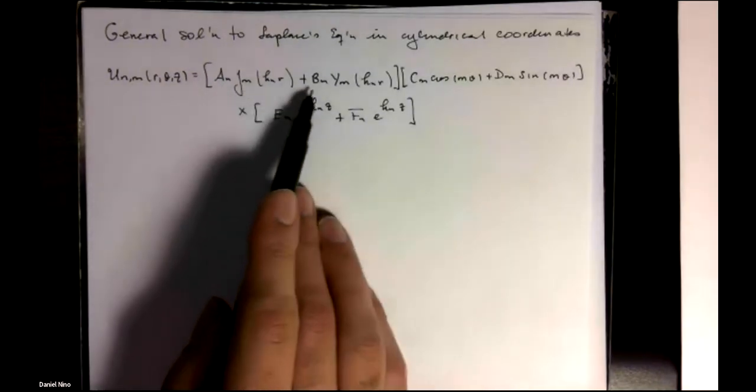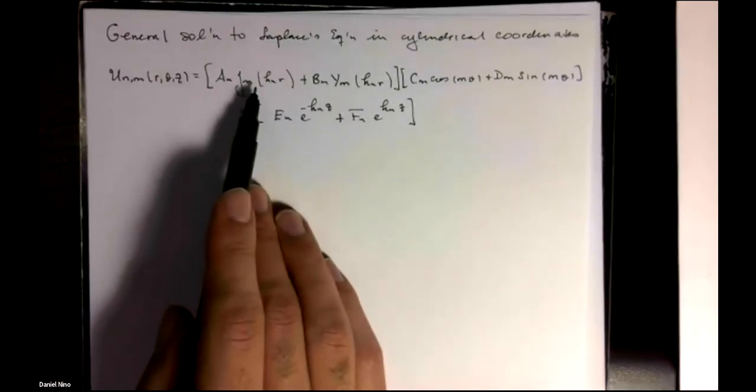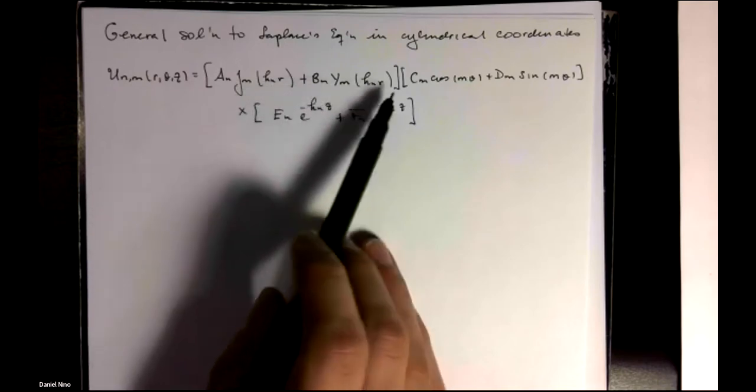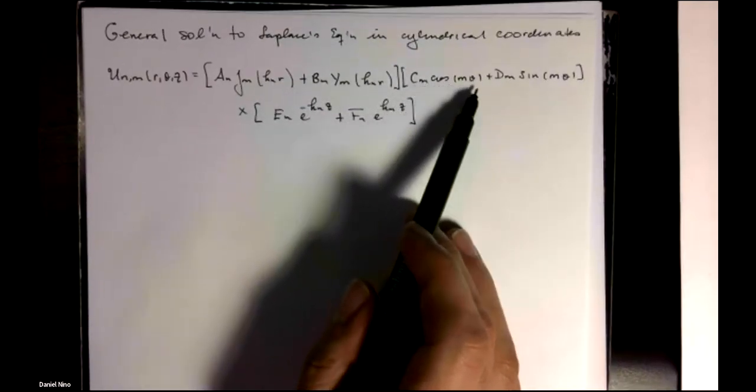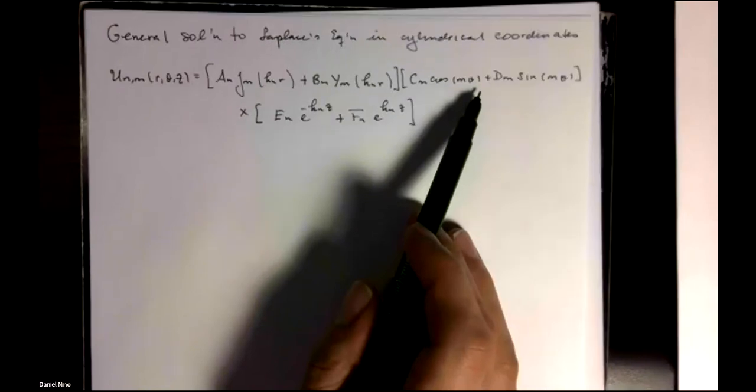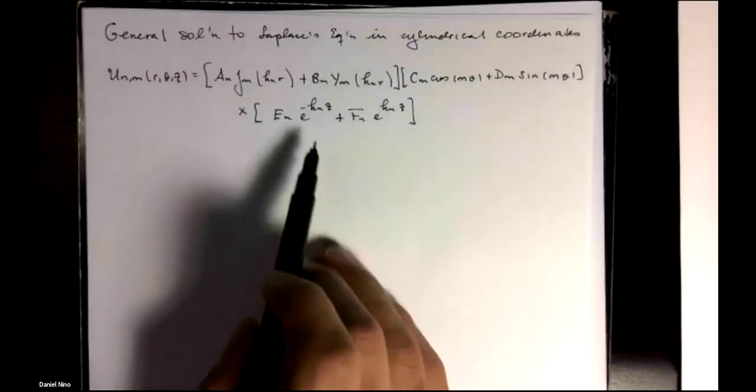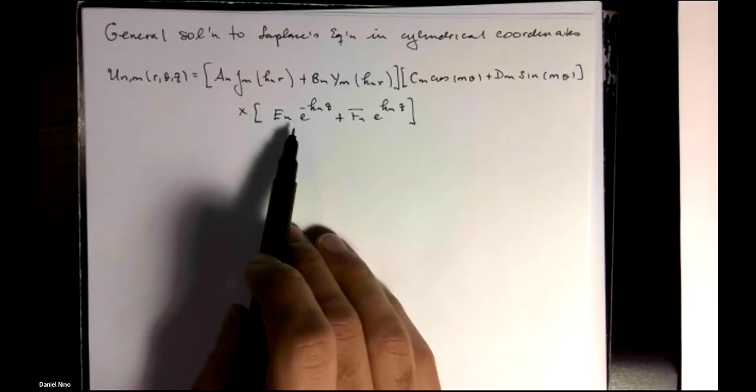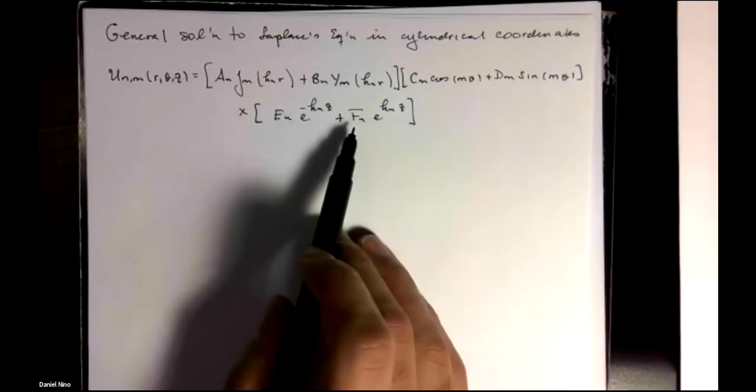The radial component is described by spherical Bessel functions. The angular component is described by trigonometric functions to be able to satisfy periodicity, and the axial component, or the z component, is described by exponential functions.